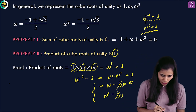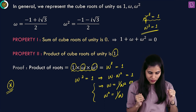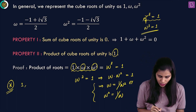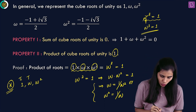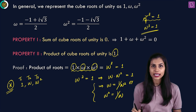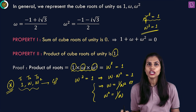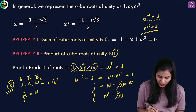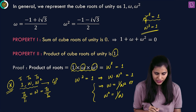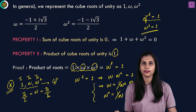One more small but insightful property: when you write 1, omega, omega squared in this order, this finite sequence is actually a geometric progression. When you compute t2 divided by t1, you get omega. When you compute t3 divided by t2, you also get omega. So 1, omega, omega squared in this order form a GP with first term 1 and common ratio omega.